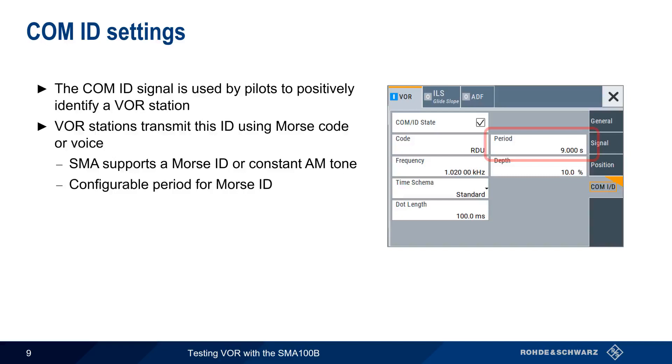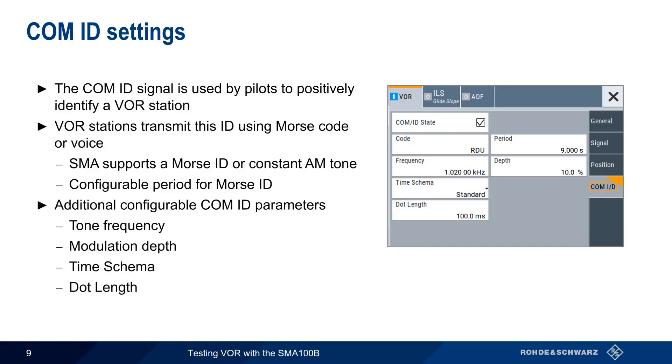The period or interval between the IDs can be defined, as well as additional ID parameters such as the frequency of this tone, the modulation depth, the time scheme, and the dot length used in producing the Morse ID. These last two parameters control the lengths and timing of the dots and dashes themselves.